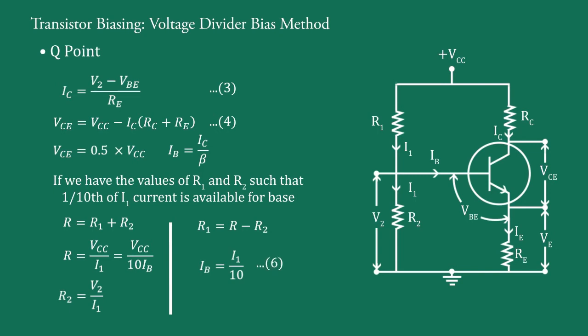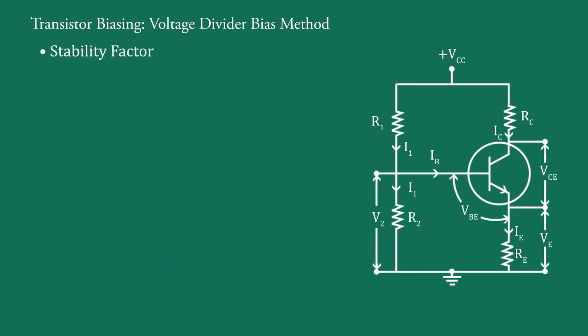From equation this, this and this, we get Q point. Now, stability factor.